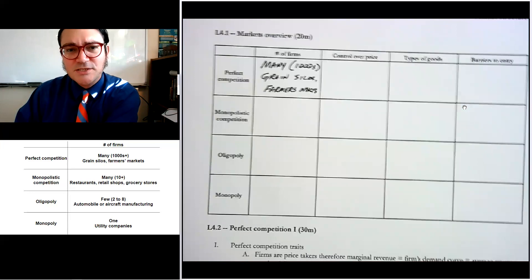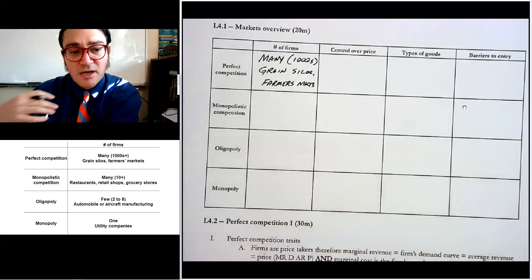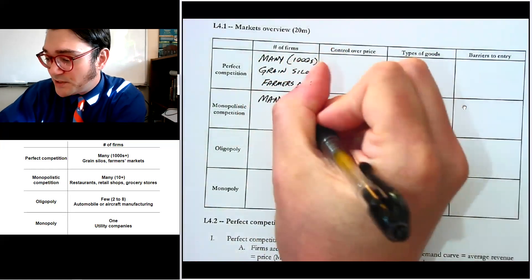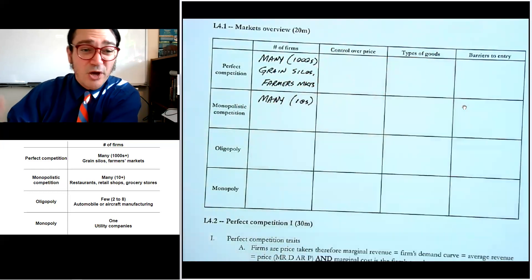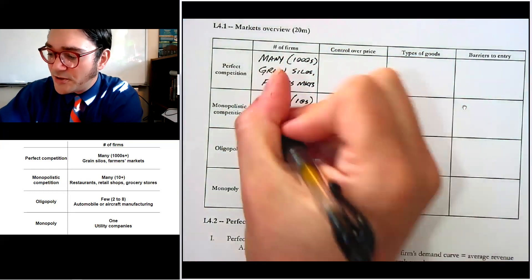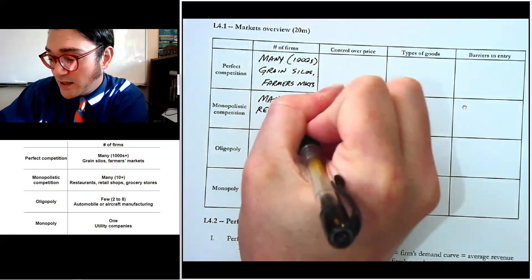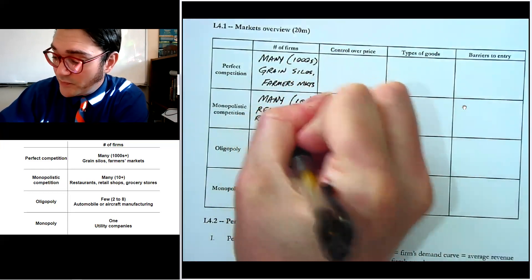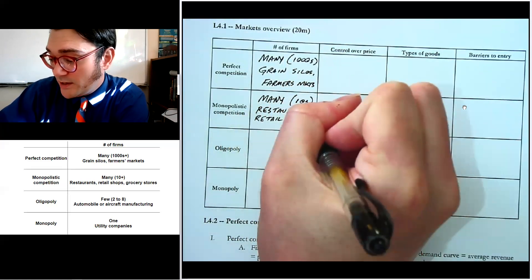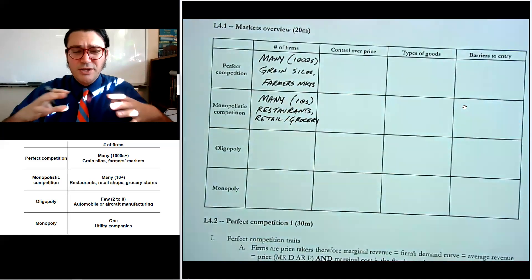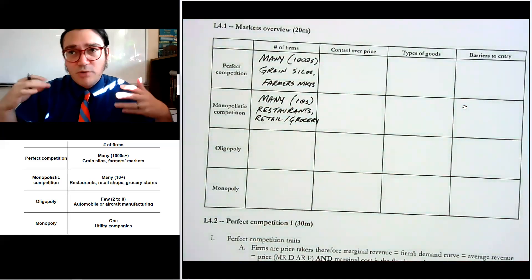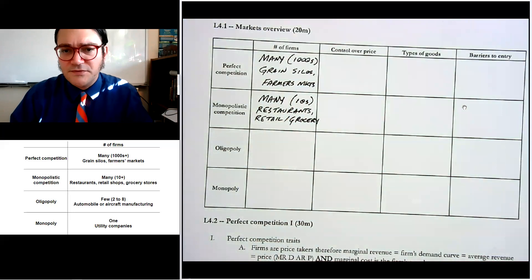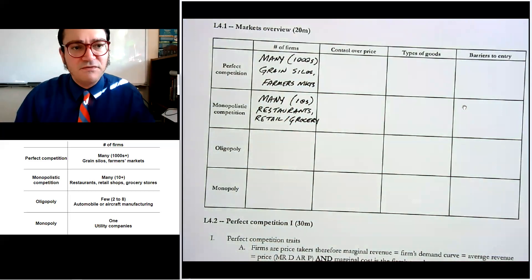Monopolistic competition is the next one, and the difference here is that there are many firms, but not as many as perfect competition — we'd say in a given geographic area maybe in the tens to a hundred. Restaurants are a great example. Retail shops and grocery stores are also examples. In a given geographic area like St. Louis, there are probably four to six different grocery chains, maybe in the tens or fifteens.